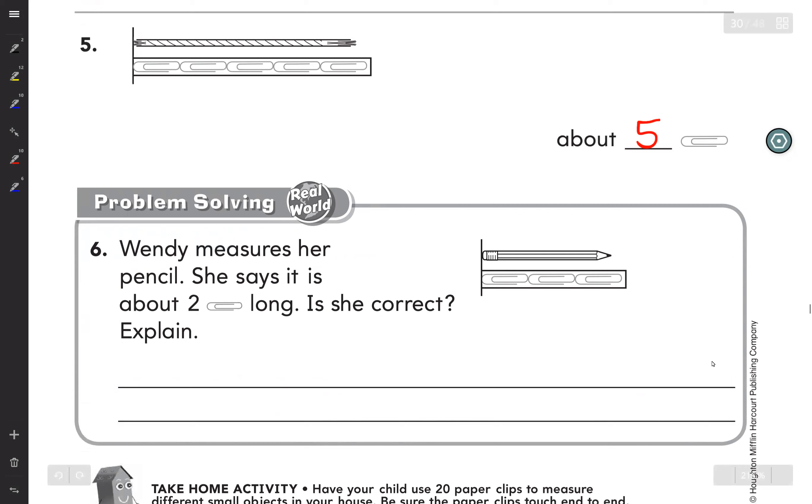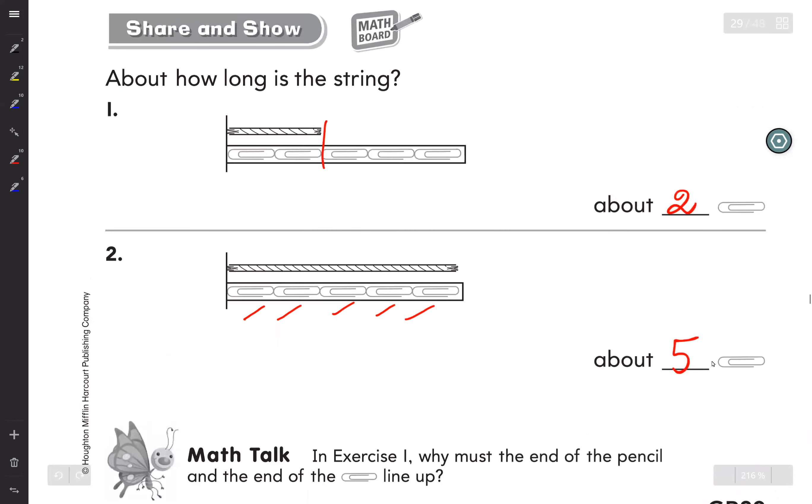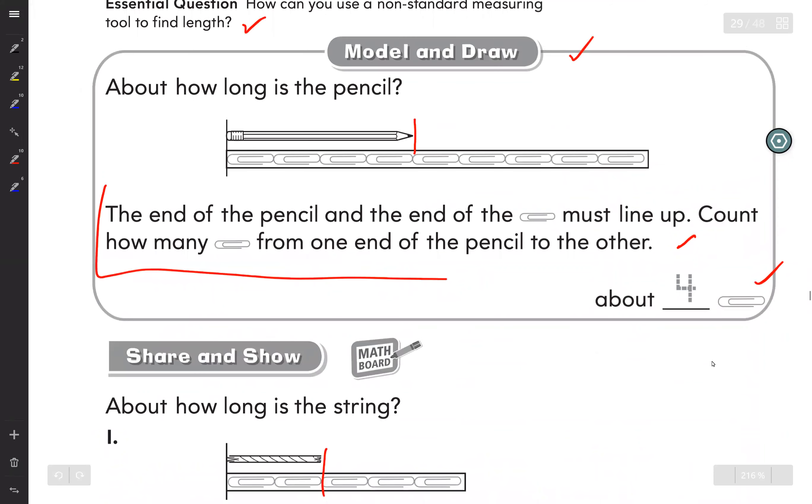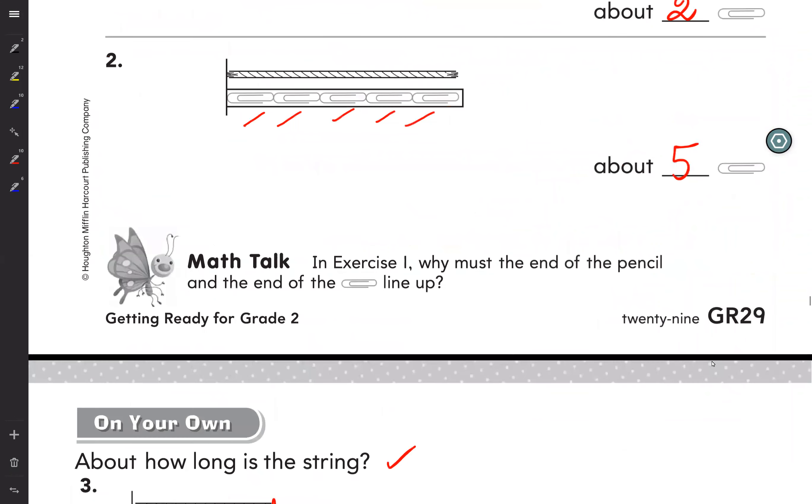Now problem solving: Dee measures a pencil. She says it is about two clips long. Is she correct? Not correct. The reason is: the end of the pencil and the end of the clip must line up. We count how many clips from one end of the pencil to the other.